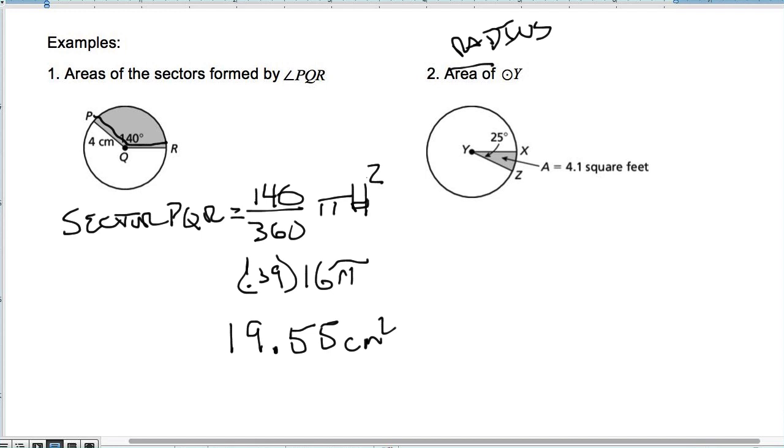So we're going to use that same equation. We're just going to plug in the information. So we have 4.1 is equal to 25 over 360 times pi R squared. Well, let's change the 25. So here's what I'm going to do first. I'm going to times both sides by 360. That way, I'm rid of my fraction. So what is 4.1 times 360 in our calculator? We get 1,476 is equal to 25 pi R squared.